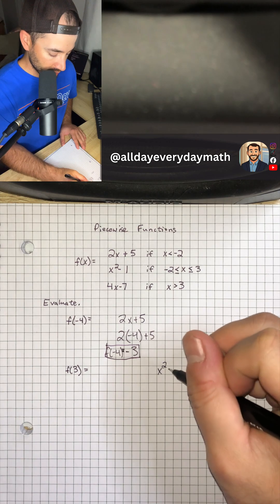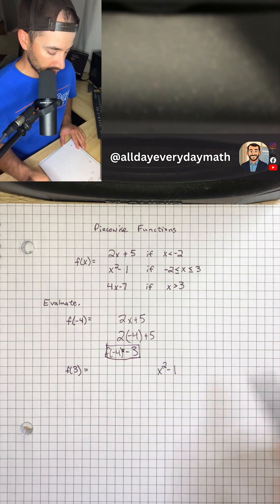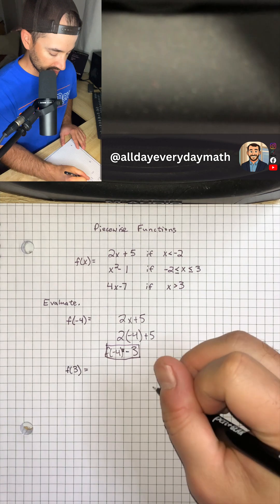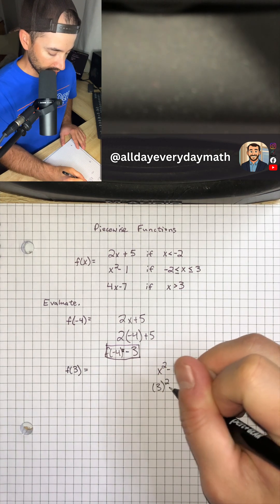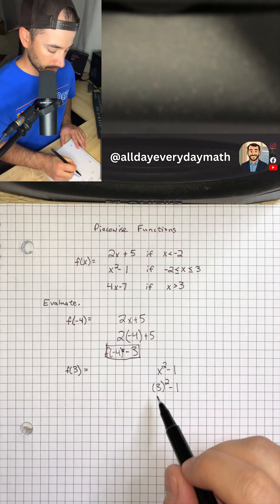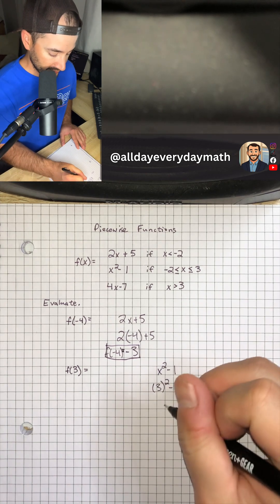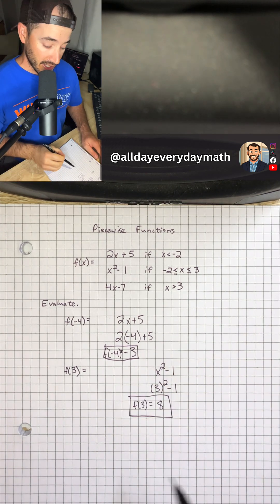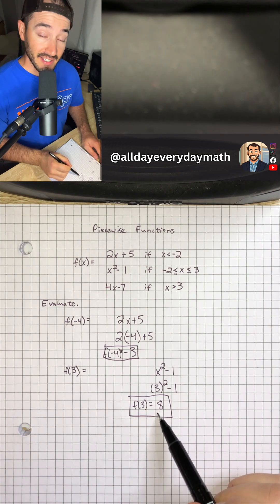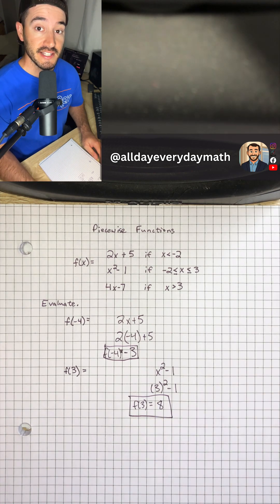So x squared minus 1. Let's plug in our x value of 3. So 3 squared minus 1. 3 squared is 3 times 3, which is 9, minus 1 is 8. And so f of positive 3 is equal to 8. And that is how you evaluate piecewise functions.